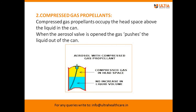The second type is compressed gas propellant. Compressed gas propellants occupy the headspace above the liquid in the can. They work when the aerosol valve is opened and the gas pushes the liquid out of the container. For example, carbon dioxide and nitrous oxide can be used as compressed gases.